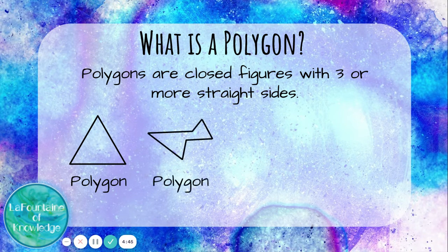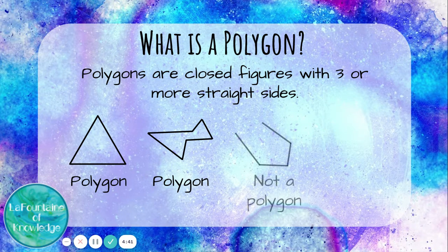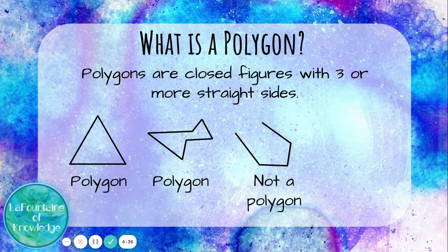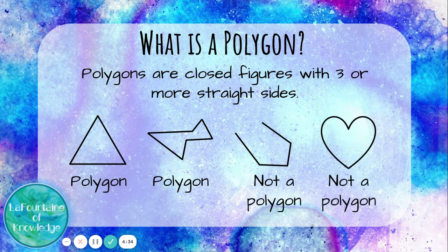This shape is also a polygon — it has six straight sides. This shape is not a polygon because it's not a closed figure; one side is open. This shape is not a polygon because it doesn't have straight sides.